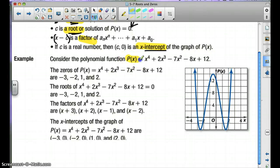So let's look at this example right here. So the zeros are negative 3, negative 2, 1, and 2. The roots, then, are the same thing. Zeros, roots.